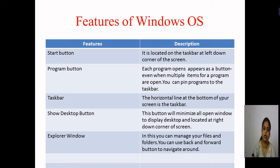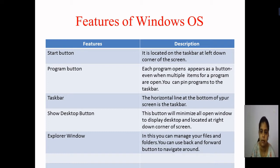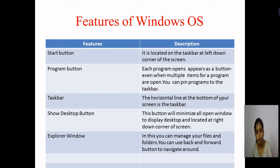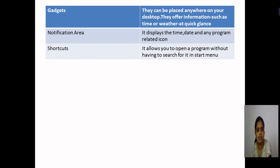The next feature is the Explorer window. The Explorer window helps you to manage files and folders — different types of files and folders are managed using this Explorer window. It uses backward and forward buttons to navigate — to move back and forward for a particular file. File navigation is done by your Explorer window. Navigation is in four ways: up, down, left, right.